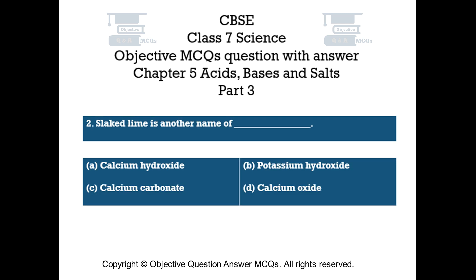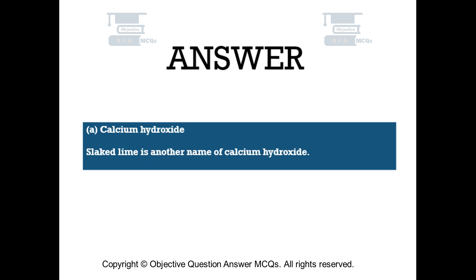Question number 2: Slaked lime is another name of — Option A: calcium hydroxide. Option B: potassium hydroxide. Option C: calcium carbonate. Option D: calcium oxide. The right answer is option A — calcium hydroxide. Slaked lime is another name of calcium hydroxide.